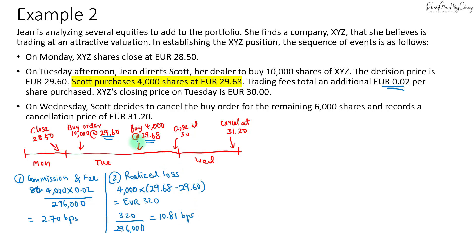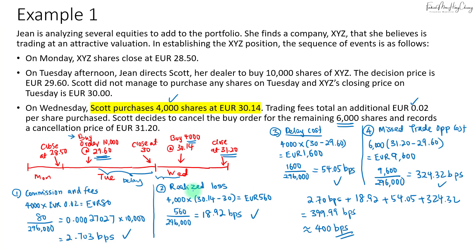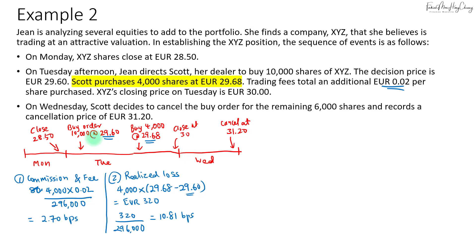Note that when shares are bought on the same day the order is placed, the decision price we compare against is the original decision price. In contrast, in Scenario 1 where shares were purchased on Wednesday, the decision price was based on the previous day's closing of 30, making the realized loss run from 30 to 30.14. In this scenario there is no delay cost — it is zero basis points because the 4,000 shares were bought on the same day the order was placed.